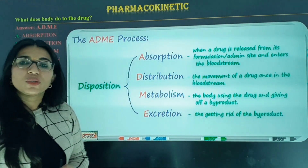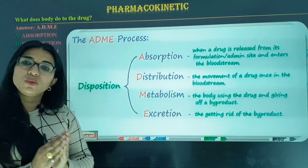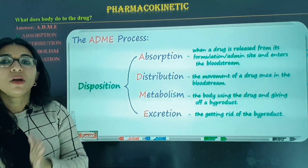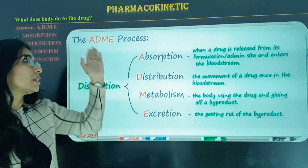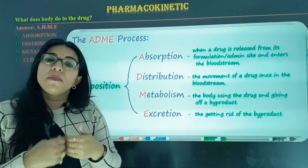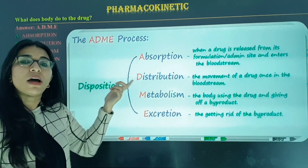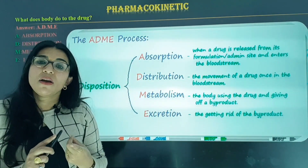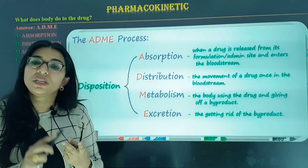Next one is pharmacokinetics. The first division — pharmacodynamics — is now complete. The second branch is pharmacokinetics. Kinetic means movement, relating to the body's response to the drug — body ka response drug ke saath. Pharmacokinetics comprises four things, explained by ADME: A means absorption, D means distribution, M means metabolism, and E means excretion.